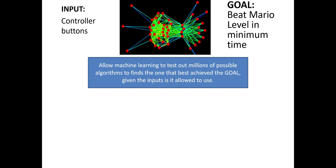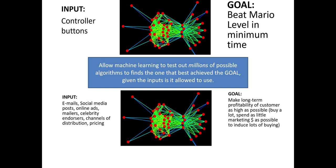Once we realize that the goal of the person developing the machine learning algorithm is only to establish the inputs and articulate the goal, we can see that machine learning has direct immediate applications for a wide variety of marketing decisions. Our inputs aren't really controller buttons — they're the common marketing inputs, the things that we think about when running a marketing campaign.